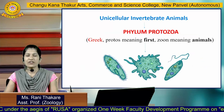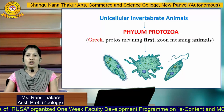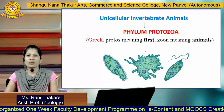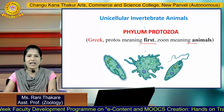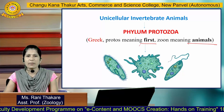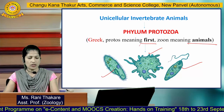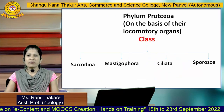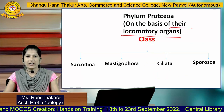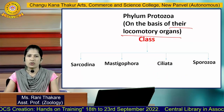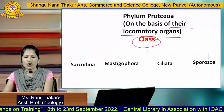Unicellular invertebrate animals are placed under phylum Protozoa. Protozoa is a word derived from the Greek language, where 'protos' means 'first' and 'zoa' means 'animal.' This phylum includes different animals like Amoeba, Euglena, and Paramecium. Phylum Protozoa is mainly classified on the basis of their locomotory organelles, and is divided into four different classes.